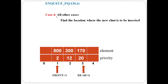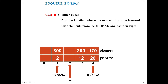Case four: rear end already has space. The new element is inserted by identifying the correct location — priority 4 is between elements 2 and 12. Elements from that location to the rear variable are shifted one position to the right, the location is freed, and the item with its priority is inserted.